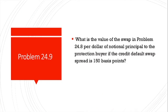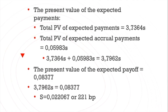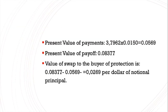Problem 24.9: What is the value of the swap in problem 24.8 per dollar of notional principal to the protection buyer if the CDS was negotiated at 150 basis points? The present value of expected payments is 3.7962, and multiplying by 0.0150 gives 0.0569. The present value of payoff remains 0.08377. The value of the swap to the buyer of protection is 0.08377 minus 0.0569, equaling 0.0269 per dollar of notional principal.